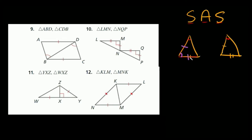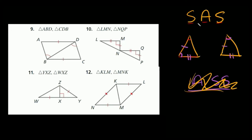In the other case, this goes angle side side — and that spells ASS. Unfortunately, we cannot prove that two triangles are congruent using ASS. So just keep that in mind — can't use that one, it doesn't work. But side angle side does work.